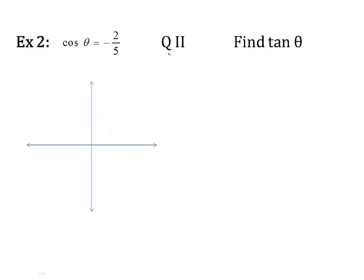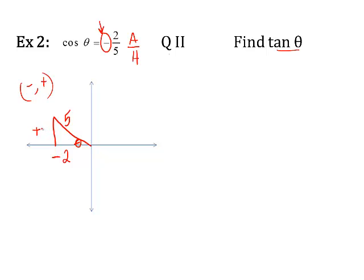Let's try another one. Cosine of theta is negative two over five, it's in quadrant two, and I have to find the tangent. Draw my reference triangle right here, and theta is at the origin. Cosine is the adjacent over the hypotenuse. So the adjacent side to theta is two, and the hypotenuse is five. Now there's another negative sign — I've got to figure out where it goes. Over here in quadrant two, x's are negative and y's are positive, so that means the x is negative two. The y side will be positive, and the hypotenuse is always positive. I'm going to use the Pythagorean theorem to find that missing side: five squared minus negative two squared equals b squared. That's 25 minus four, which gives me 21.